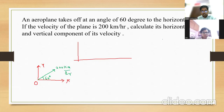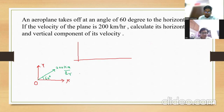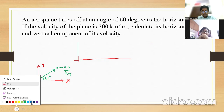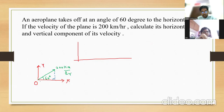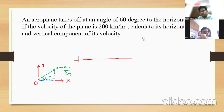First of all, convert the velocity 200 km per hour into meter per second - but actually, they haven't mentioned that you need to find it in meter per second, so you can find the horizontal and vertical components directly. Simply drop a perpendicular on the x-axis if you want the horizontal component. The horizontal component Vx equals 200 cos 60. Cos 60 is half, so that is 100 km per hour.